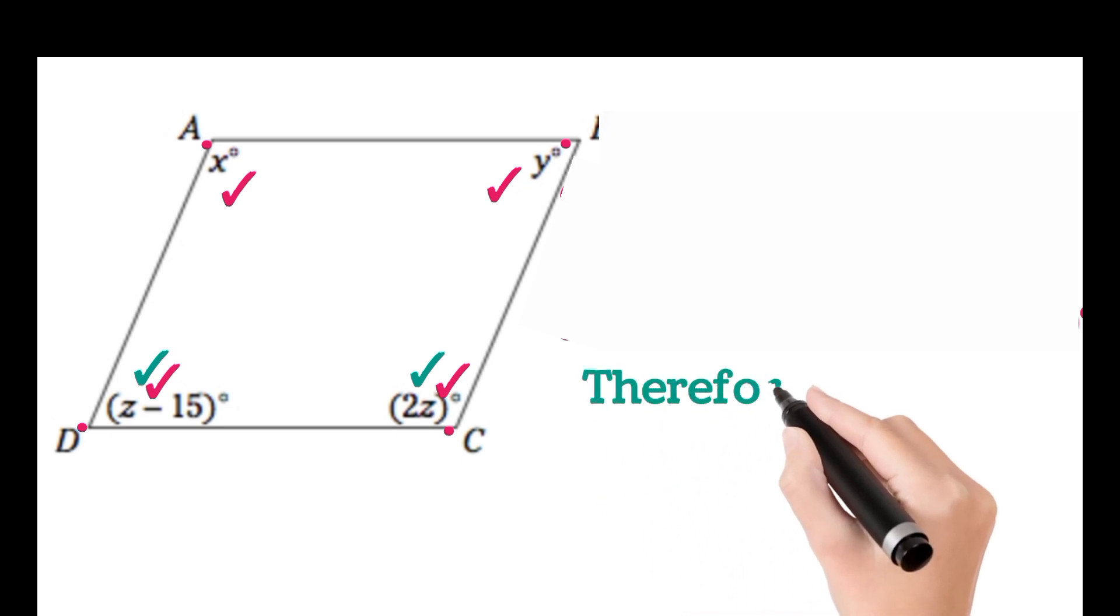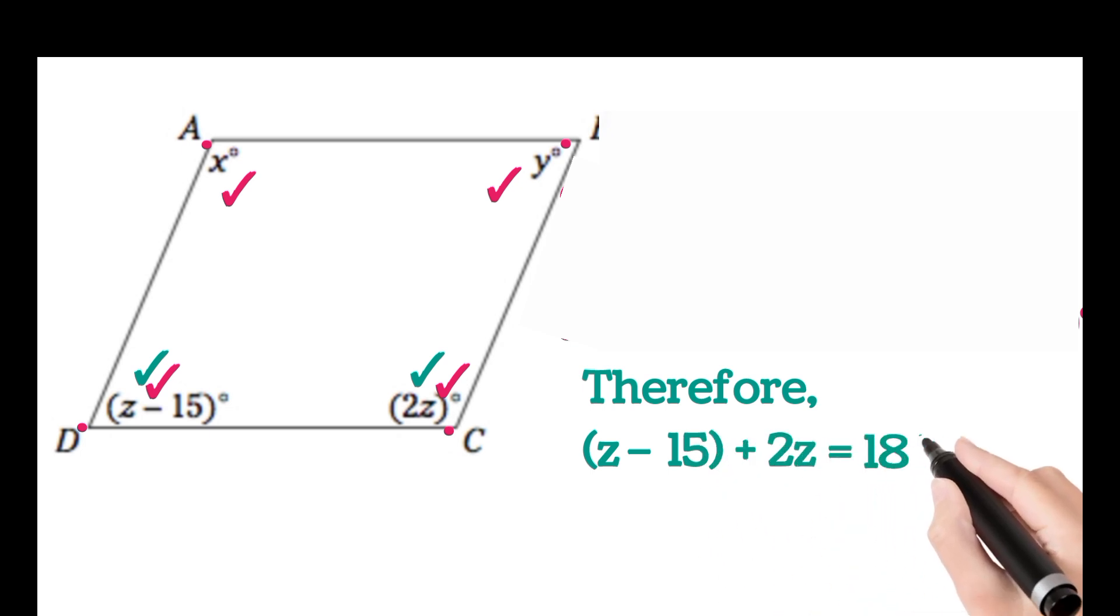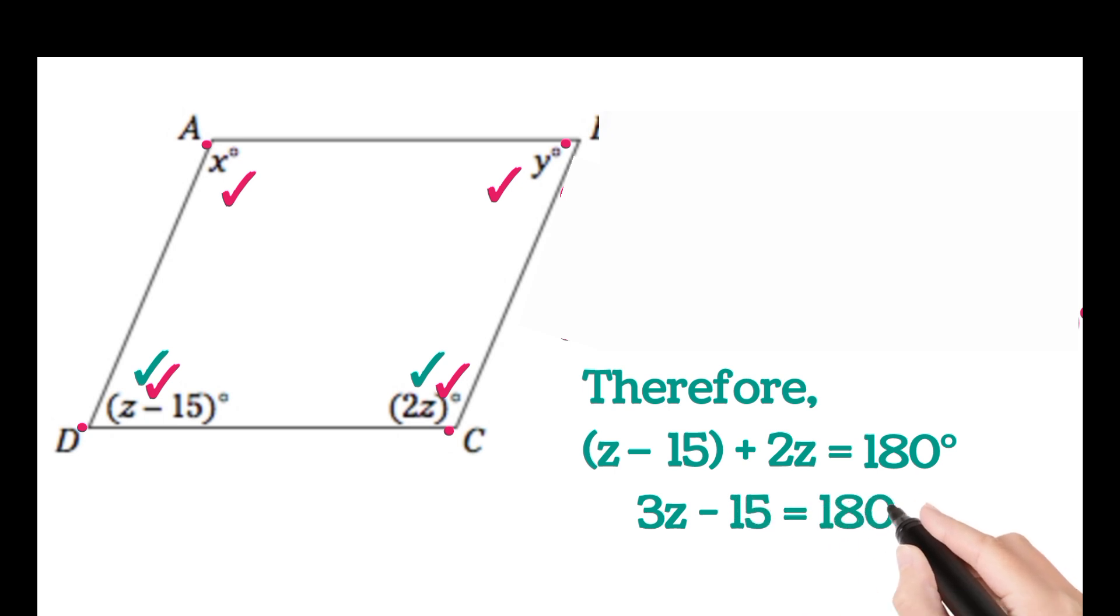We can write (z - 15) plus 2z is equal to 180 degrees, which will give 3z - 15 is equal to 180 degrees, or 3z is equal to 195, that is z is equal to 65 degrees.